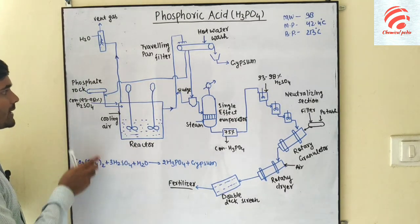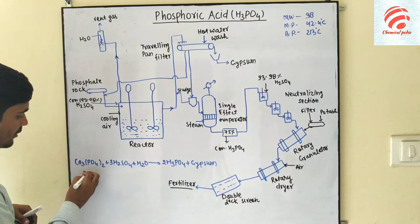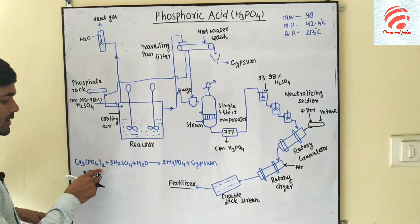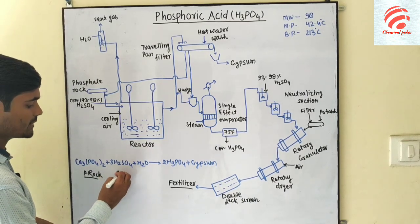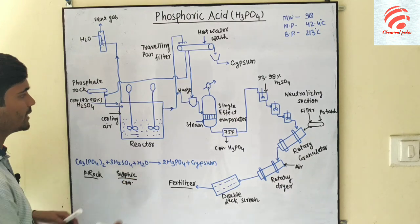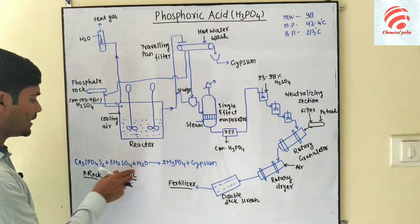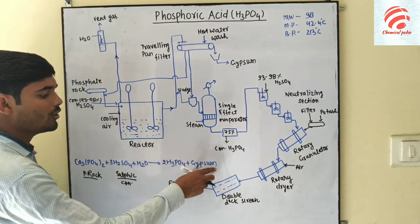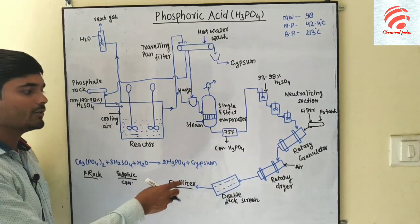So what happens to the phosphate rock? This is our formula. We have to keep the phosphate rock — this is sulfuric acid, highly concentrated at 90–98% — and now we have to react Ca₃(PO₄)₂ with H₂SO₄ to get our product.